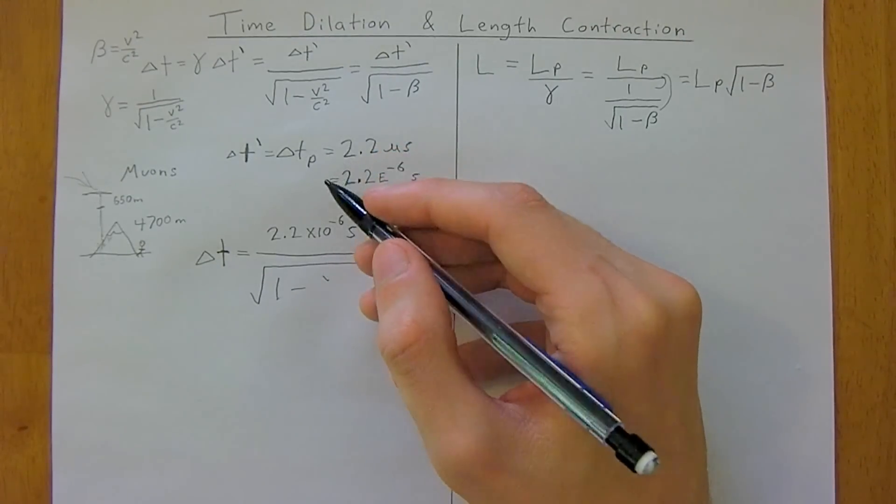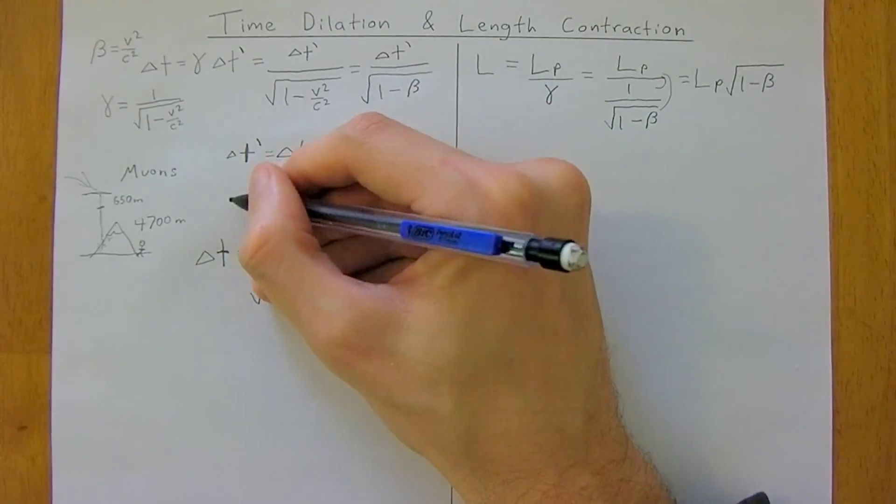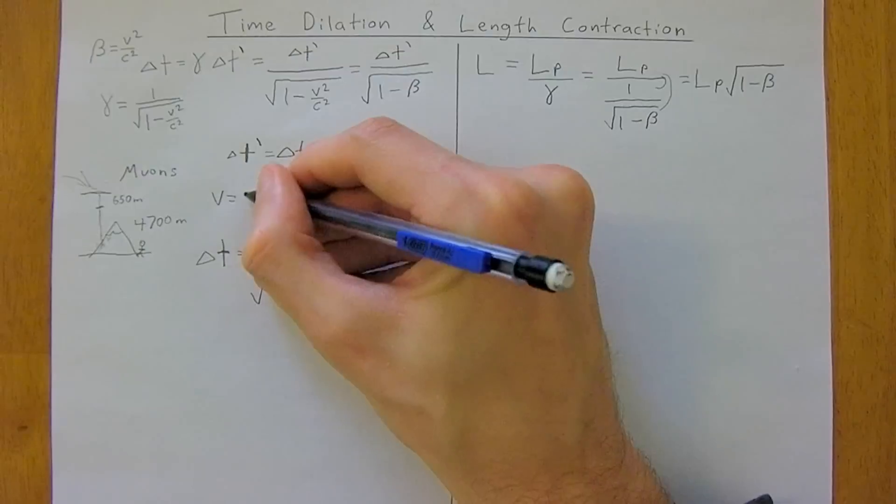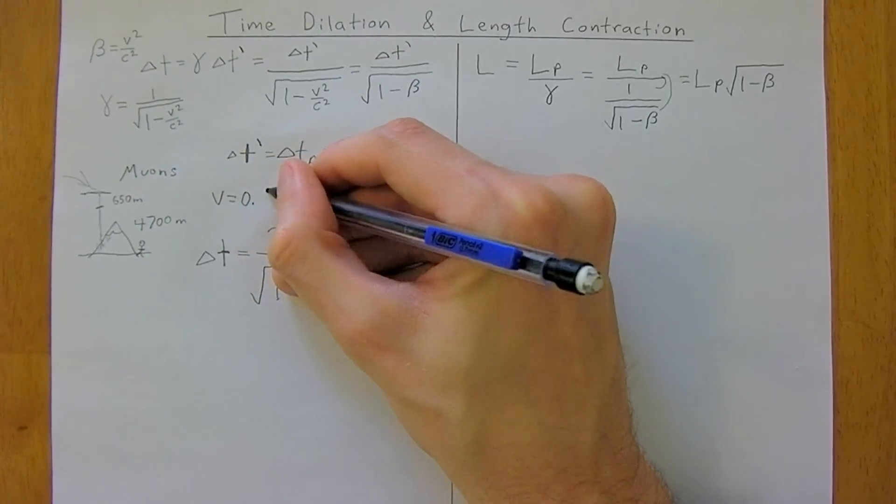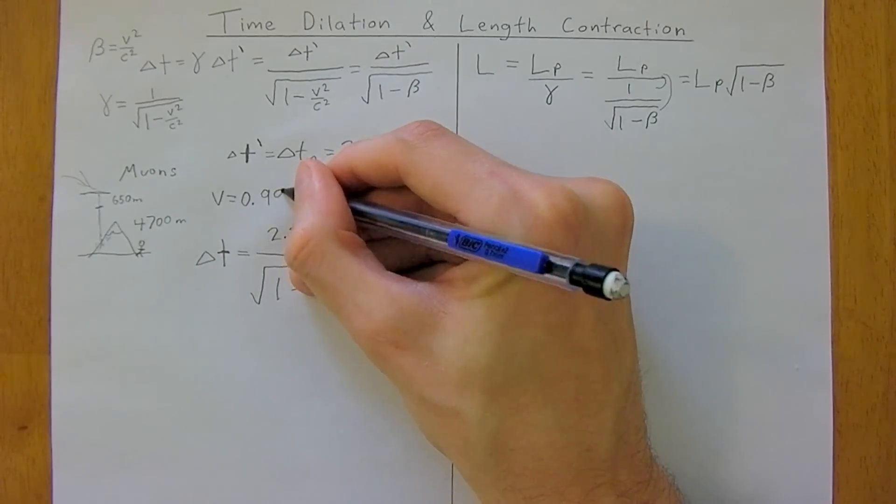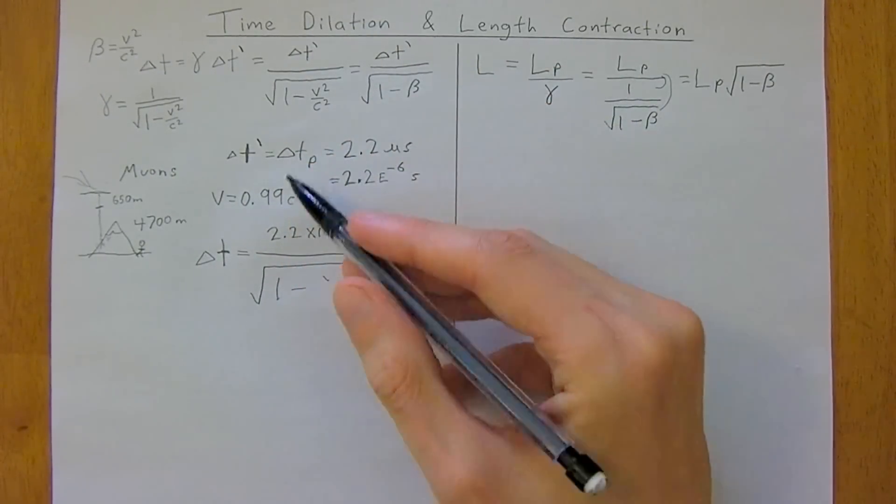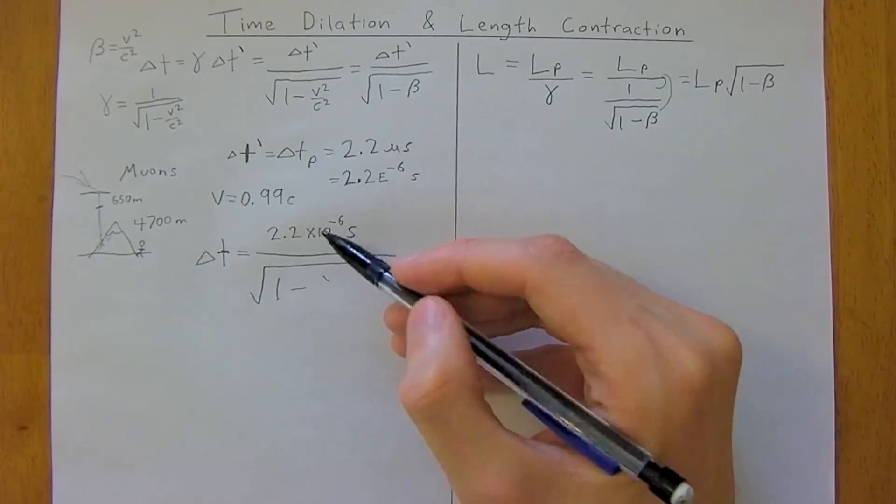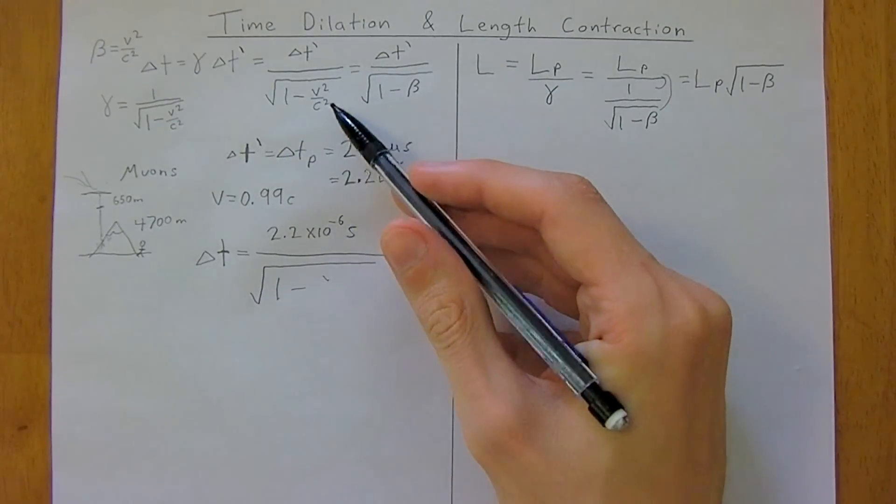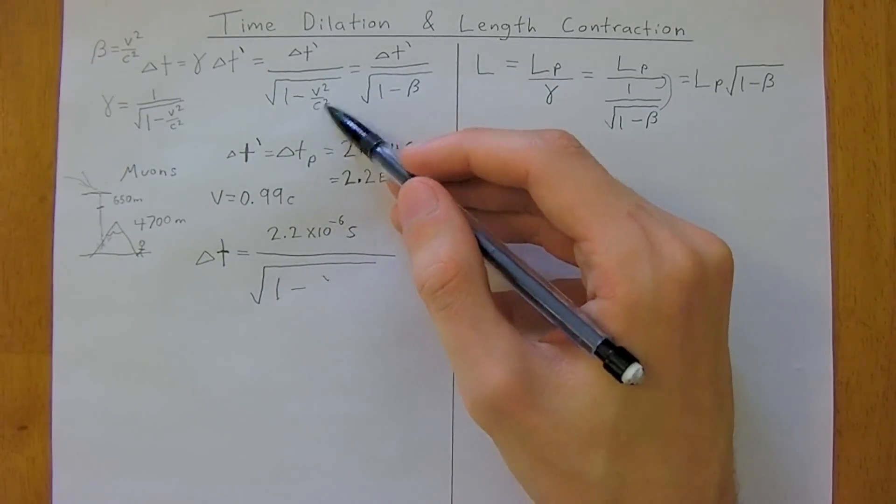So, in this case, the muons are traveling at a velocity of about 0.99c. So, this is just an easy way we represent it because it will make this equation easier, ultimately, because c will cancel out.